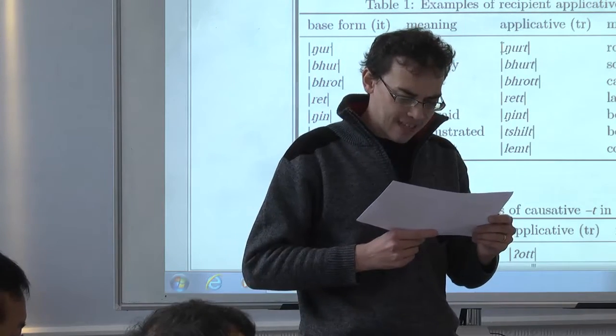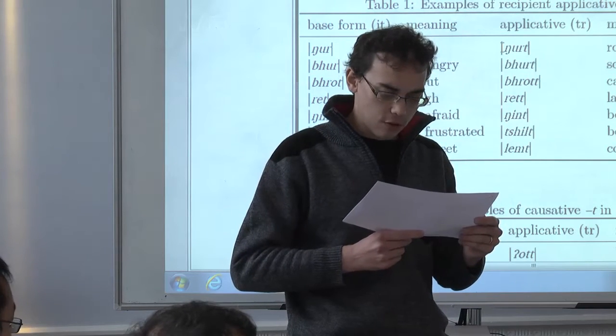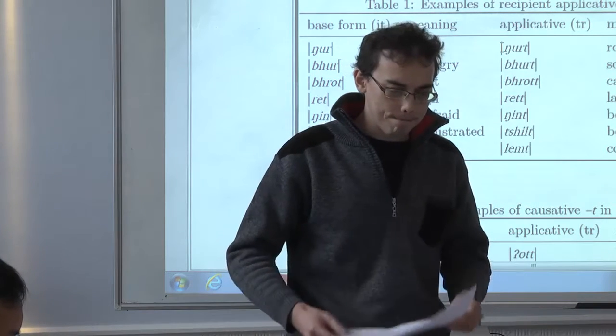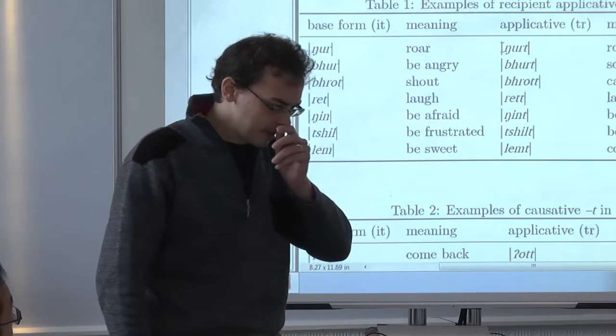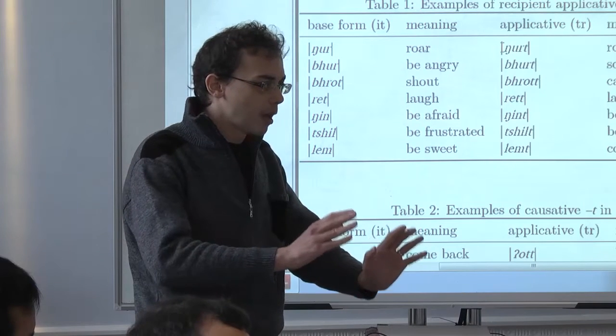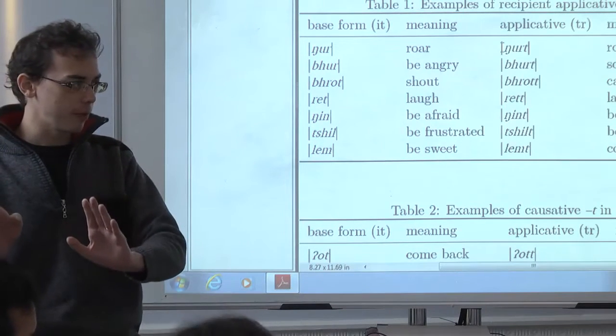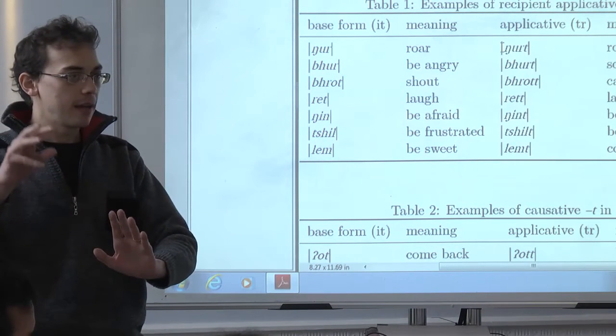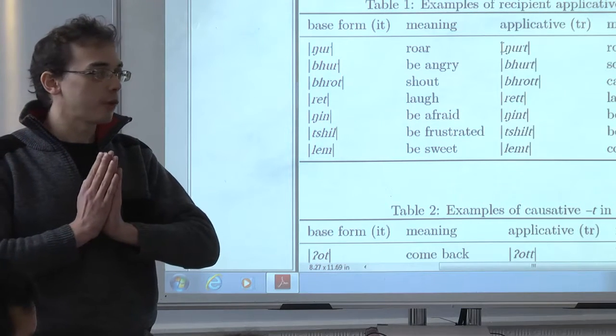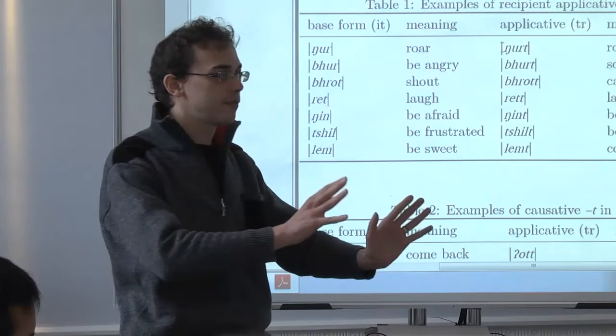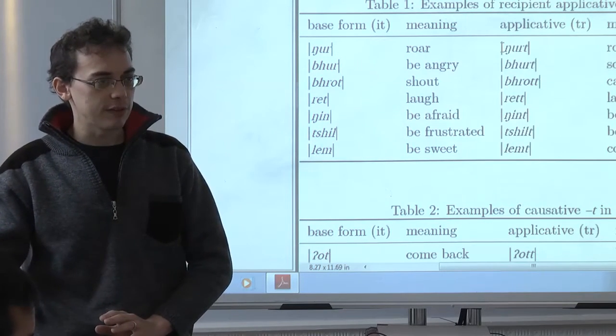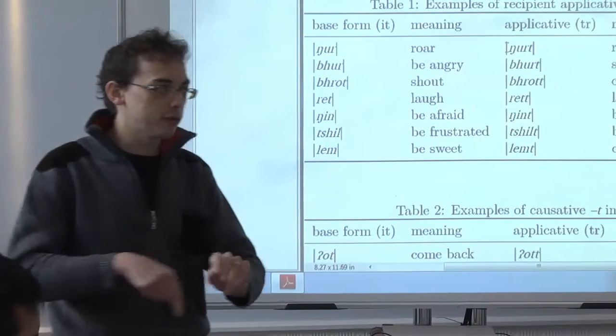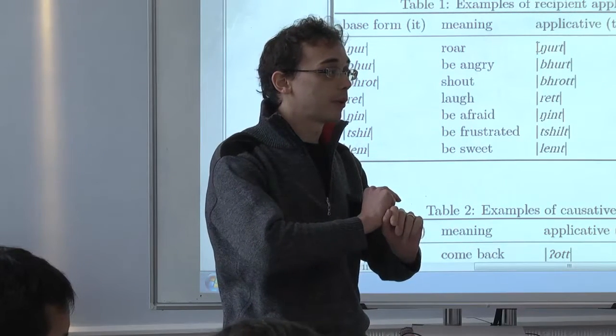There are examples of applicative. So, by applicative, I mean you take an intransitive verb and you derive a transitive verb from it. Unlike in the case of a causative. In a causative, you should take an intransitive verb and you causativize it. The object of the transitive verb, the cosy, corresponds to the subject of the transitive verb. Okay?